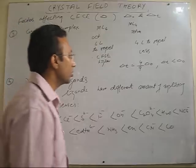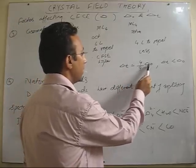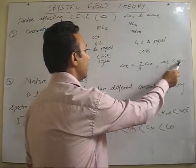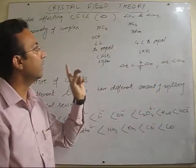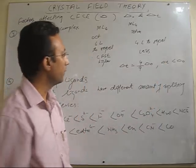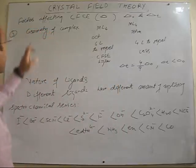There is a relation delta t is 4 by 9 delta naught, which shows that delta t is always less than delta naught for the same metal and same ligands. So, this is one factor, geometry of complex.